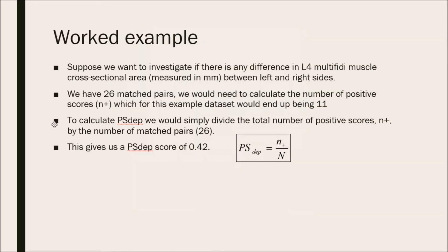To calculate the PSDEP, we would simply divide the total number of positive scores, N-plus equals 11, by the number of matched pairs. In this case, it's 26. This gives us a PSDEP score of 0.42.